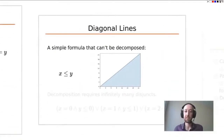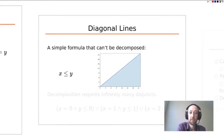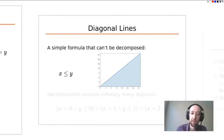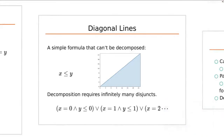In the 2D world we can draw graphs. A classic example where decomposition is not possible is x less than or equal to y: the graph is a diagonal line shooting off to infinity. This formula is not decomposable because for every value of x, there's a different range of acceptable values for y — when x equals 0, y must be less than 0; when x equals 1, y must be less than 1; and so on. So we'd end up with infinitely many disjuncts.